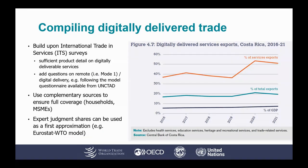This approach involves building upon international trade in services surveys — firstly, by ensuring that sufficient product detail on digitally deliverable services is collected and published, then by adding questions on remote or digital delivery. For example, by implementing the model questionnaire developed by UNCTAD with India, Thailand, and Costa Rica, whose results can be seen in the chart. Complementary sources can help to ensure full coverage — for example, card payment data might be useful for measuring households' imports of digitally delivered services. Extending ITS surveys with questions on digital delivery will take time to become widespread. The handbook notes that shares based on expert judgment, such as those set out in the Eurostat-WTO model for allocating trade flows to modes of supply, can provide useful insights.